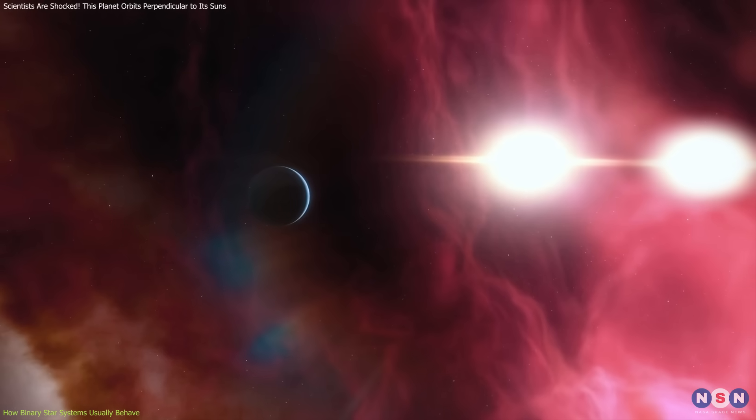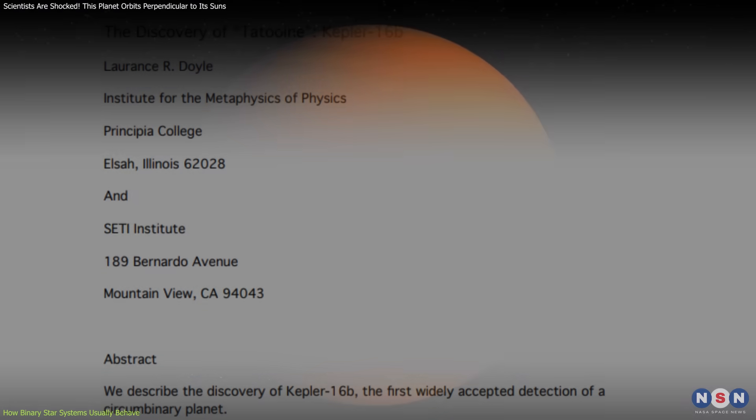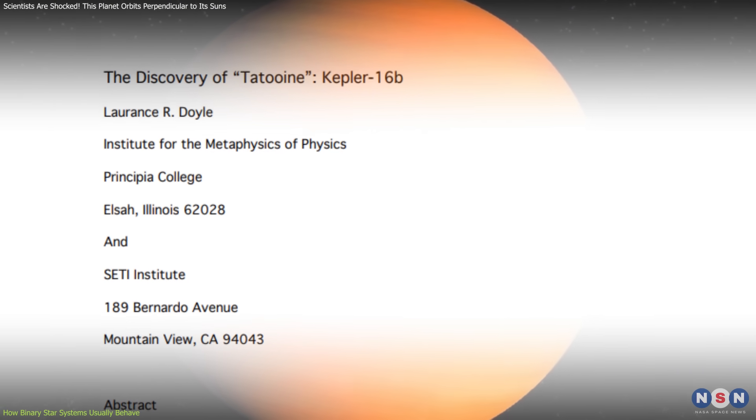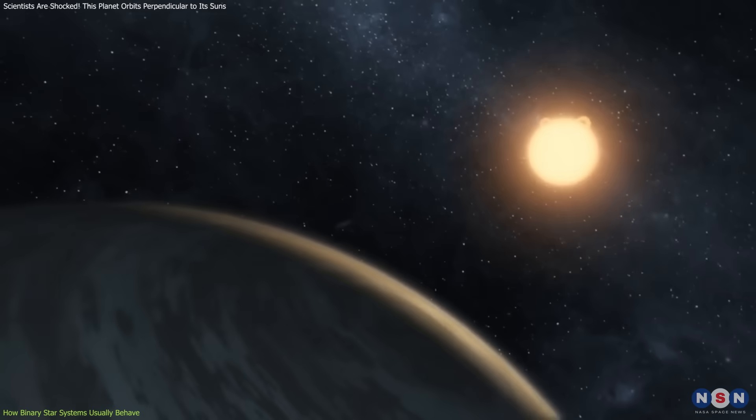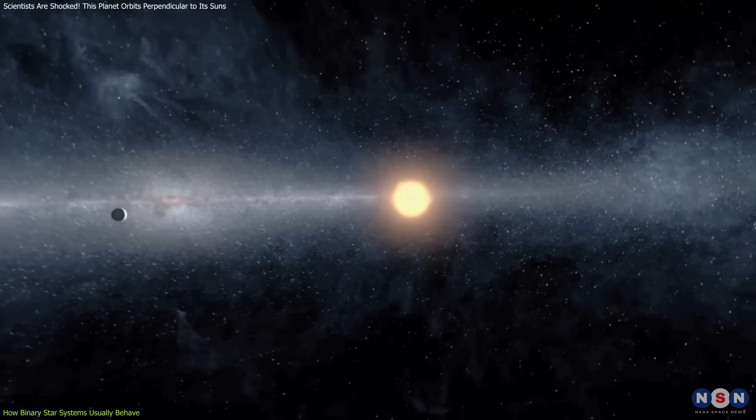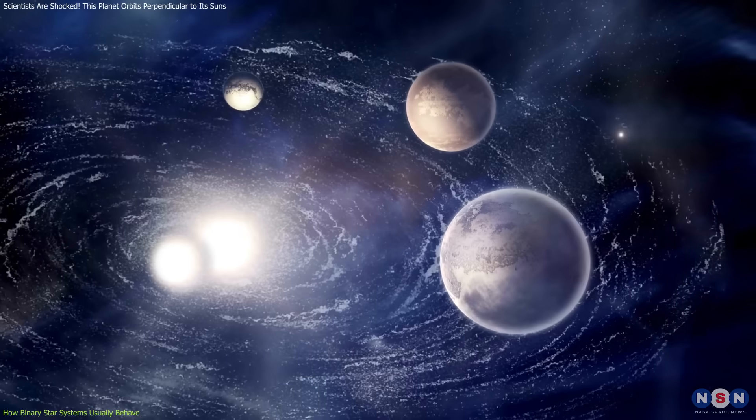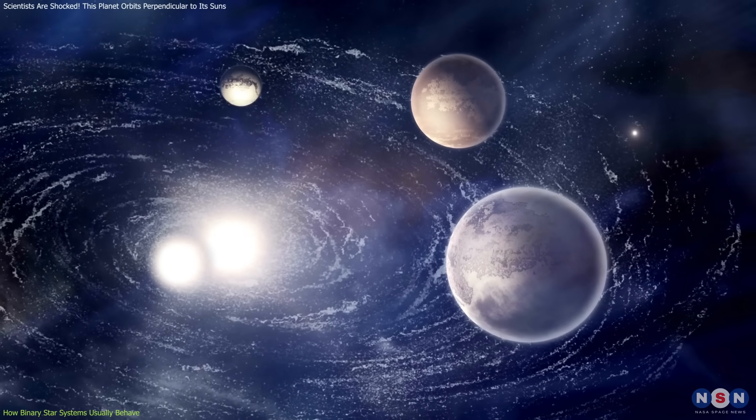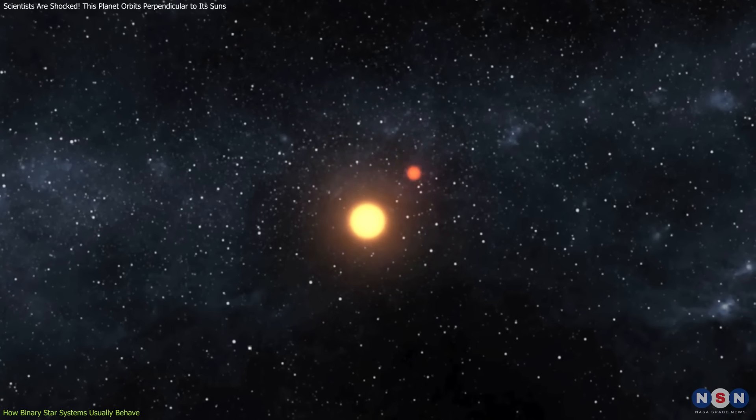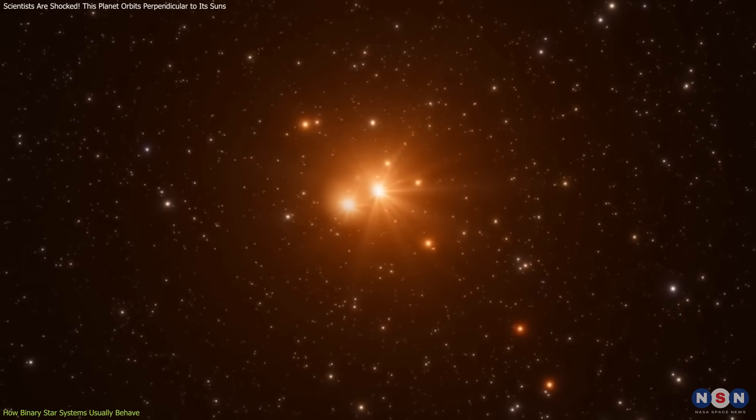If planets stray too far from that plane, they risk being pulled apart or ejected from the system entirely. One of the most iconic examples of a circumbinary planet is Kepler-16b, often dubbed the Tatooine planet, because it orbits two stars and reminded astronomers of the famous twin sunsets from Star Wars. In such systems, planets are often forced to migrate into safe, stable regions, where the gravitational pulls of both stars balance out just enough for long-term survival. This migration and stabilization explain why most discovered circumbinary planets follow neatly aligned, almost predictable orbits.